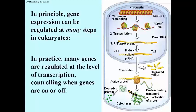In practice, where you have regulation, most genes are actually regulated at the level of transcription — a simple switch that turns genes on, turns them off, or in some cases it's like a dimmer switch where you can increase or decrease the level of transcription without actually shutting the gene on or off. But it's almost always related to how often transcription is initiated by RNA polymerase.